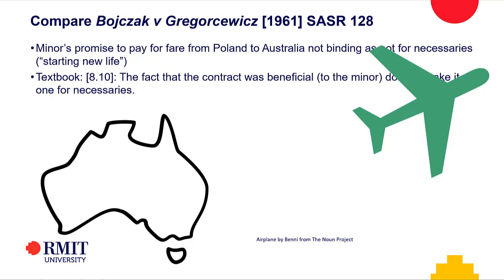You could argue the first kid could have walked to work. There's a question of law — is it necessary? — and then a question of fact. The court looks at whether he needs it to get to work, his station in life, and what his requirements are. His requirement was to ride to work. It becomes a question of fact, and it could have fallen over on the facts, but clearly it didn't in that case.